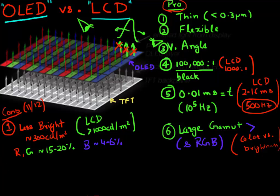Another limitation comes from the use of these organic molecules for making light emitting diodes: these displays degrade over time. Especially the blue LED, which is already a weak point, degrades much faster, and so the overall brightness of your display degrades over time.